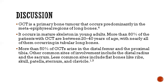Coming to the discussion: GCT is a primary bone tumor that occurs predominantly in the meta-epiphyseal region of long bones. It is seen in mature skeleton in young adults, with 80% of cases seen in ages between 20 to 40 years, and nearly all of them occurring in tubular long bones. 50% of GCT is seen in the distal femur and proximal tibia, and it may also occur in less common sites such as flat bones like ribs, skull, patella, sternum, and clavicle.